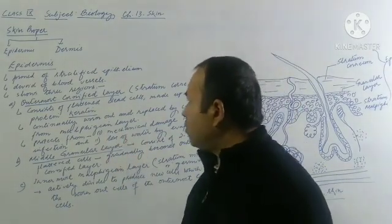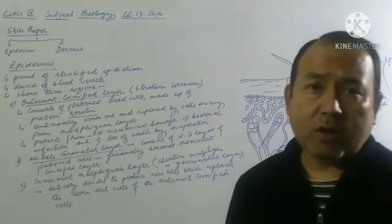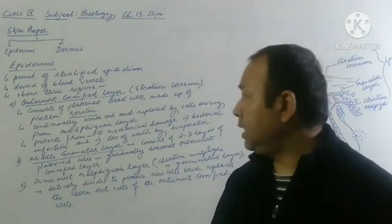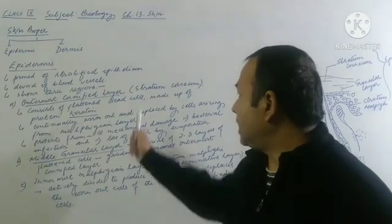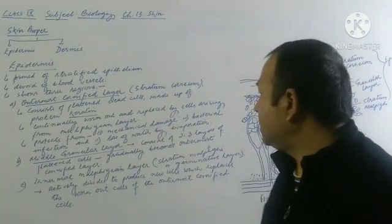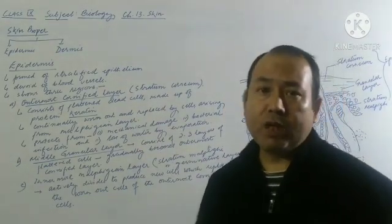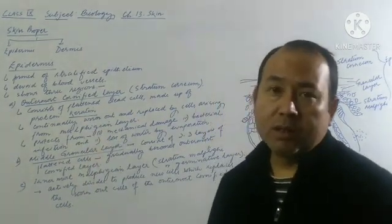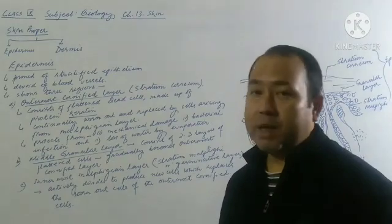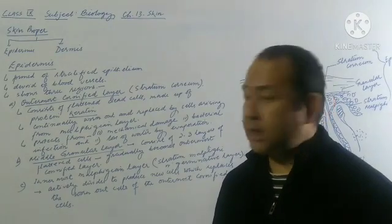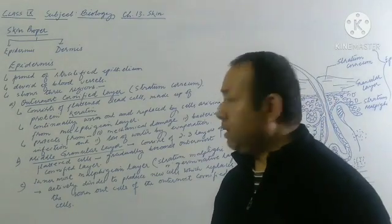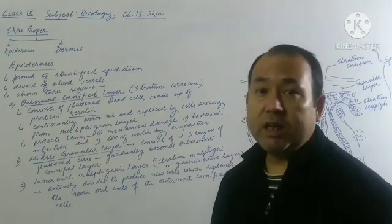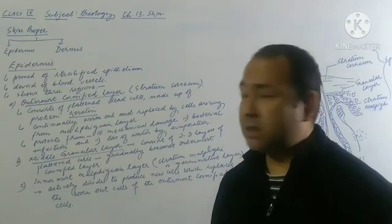The outermost cornified layer mainly consists of flattened dead cells, which are made up of a protein called keratin. This term you need to remember. Keratin is mainly responsible for the formation of hair and nails. These proteins are mostly found in dead cells such as hair and nails.